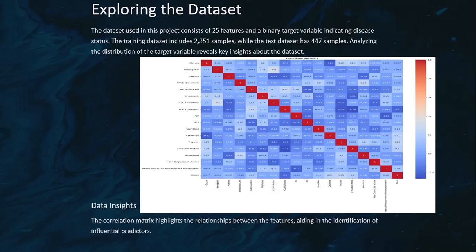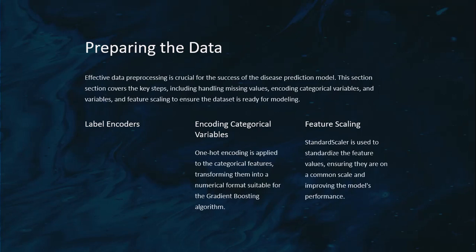Coming to preparing the data, we used label encoders and one-hot encoding, which is used for categorical features and transforming them into numerical formats suitable for the gradient boosting algorithm.